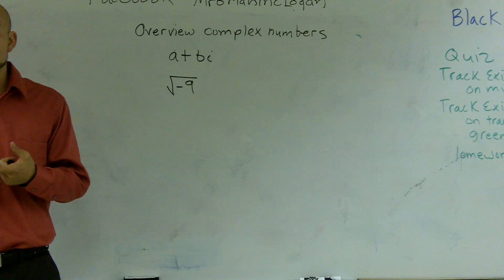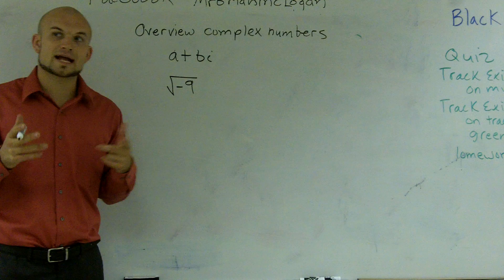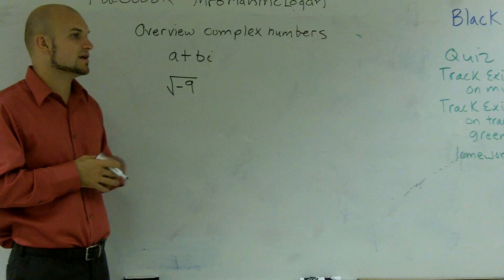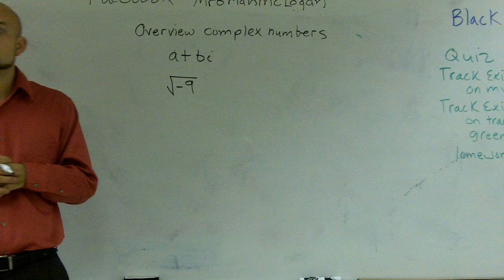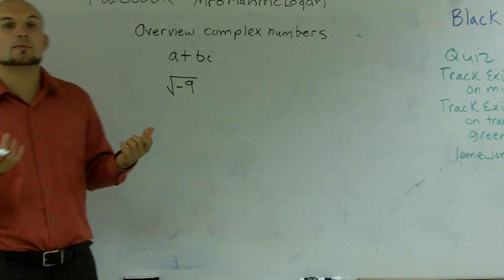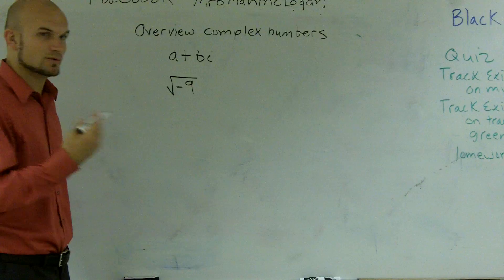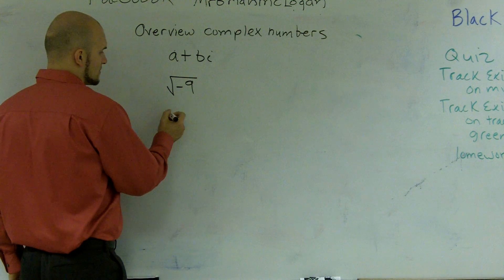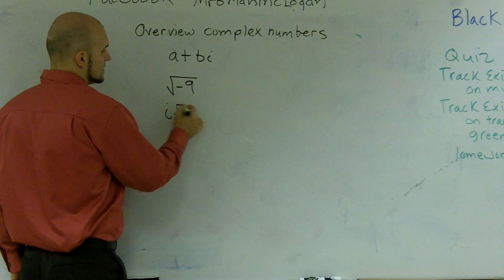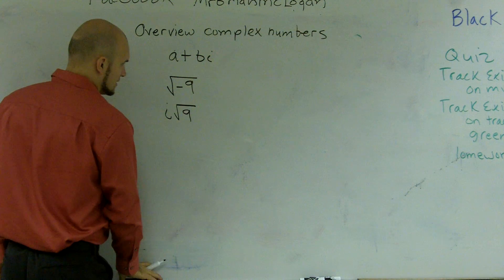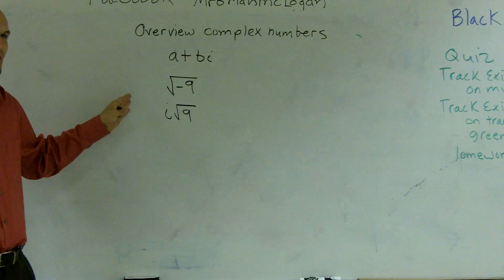But this is a negative 9 because 3 times 3 doesn't equal negative 9. Negative 3 times negative 3 doesn't equal a negative 9. Only 3 times negative 3. And those two values are different. So what we do when we have a negative number, it's impossible for us to take a number that's going to multiply by itself to give us a negative. So therefore, what we do and what we've learned maybe some before is we write i as the square root of 9.